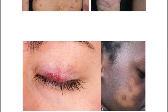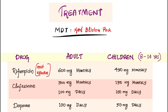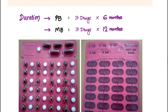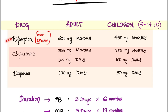Coming to the treatment: multi-drug therapy (MDT) uses the red blister pack. The three main drugs are rifampicin, clofazimine, and dapsone, where rifampicin is the most effective. Some drugs are taken daily and some are given only monthly. Rifampicin 600 mg is given monthly for adults, whereas 450 mg is given for children aged 8 to 14 years.